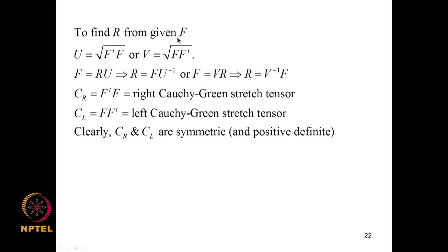To find R from a given F: first compute U = √(F^T F) and V = √(FF^T), then R = FU⁻¹ or alternatively R = V⁻¹F. The quantity F^T F is known as the right Cauchy-Green stretch tensor CR, and FF^T is the left Cauchy-Green stretch tensor CL. Both are symmetric and positive definite.